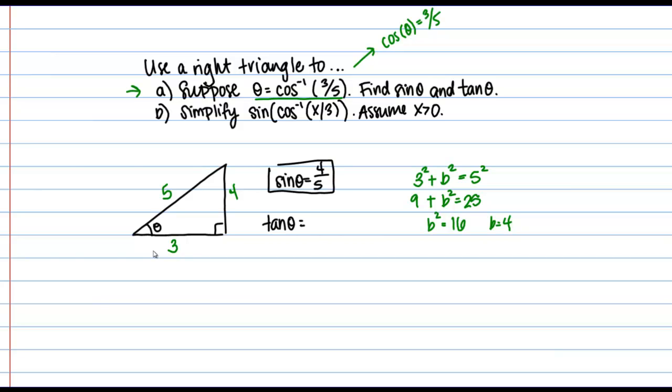And then tangent of theta is the opposite over the adjacent side, so here that should be 4/3. Alright so just setting up this triangle based on theta equals inverse cosine of 3/5 allowed us to easily find sine of theta and tangent of theta. So let's go ahead and move on to part B.